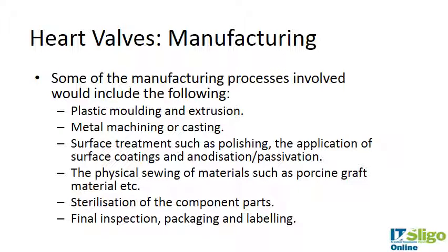In terms of manufacturing: plastic parts can be molded and extruded; metal machining or casting is used for the discs, which then need to be polished. Surface coatings such as pyrolytic carbon are deposited using plasma spray or chemical vapor deposition. Anodization and passivation are important to prevent corrosion. The porcine graft material is physically sewn. Component parts are sterilized — mechanical valves using ethylene oxide, e-beam, or gamma ray; for porcine grafts, steam sterilization may be used. Then final inspection, packaging, and labeling follow.